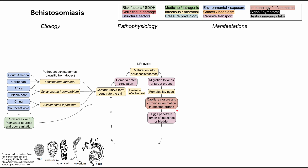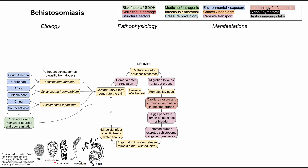The eggs then penetrate the lumen of the intestines and bladder, and the infected human excretes the eggs in urine and feces. The eggs end up in a freshwater source, where they hatch and release miracidia — flat, ciliated larval forms. The miracidia then infect freshwater snails, the intermediate host, where they develop into cercaria and are released back into the water, ready to infect other humans who come into contact with it, such as while swimming.